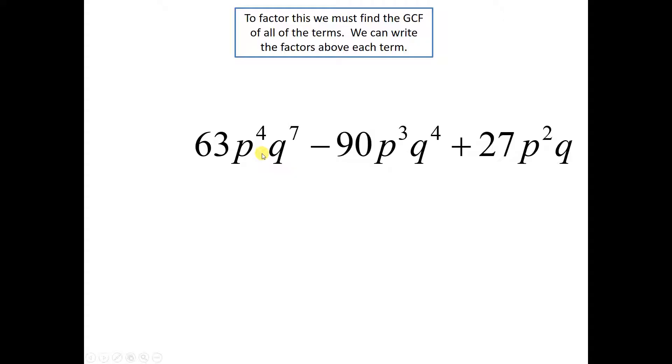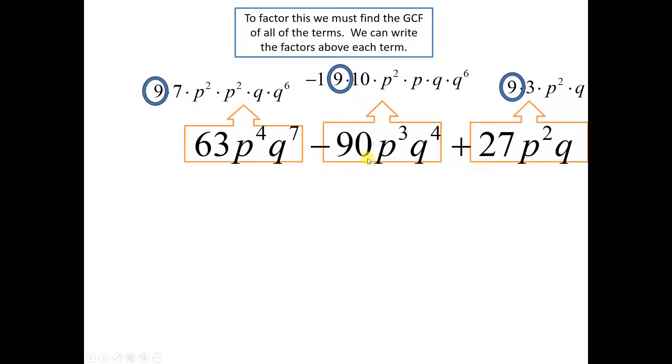So I'm going to factor looking for the greatest common factor, and instead of writing out four p's or seven q's, I'm going to write it like this: q times q to the 6th. And the reason I wrote it this way is because I've got a q over here. So that's going to be probably the thing I can take out of all three terms. Now the 90 is 9 times 10. And here's the 27. So when I look, I see they all three have a factor of 9 that I can take out. They all three have a p² and they all three have a q. My greatest common factor is going to be 9p²q.